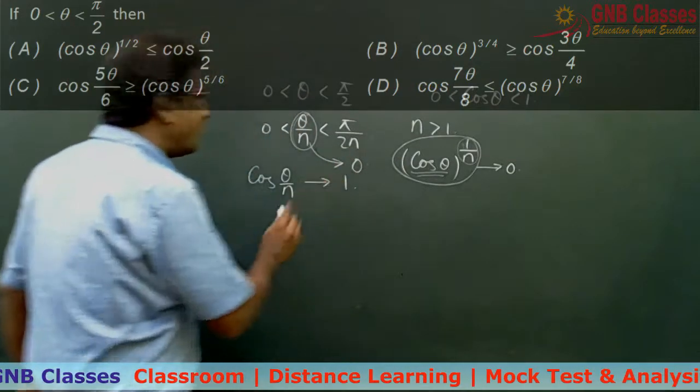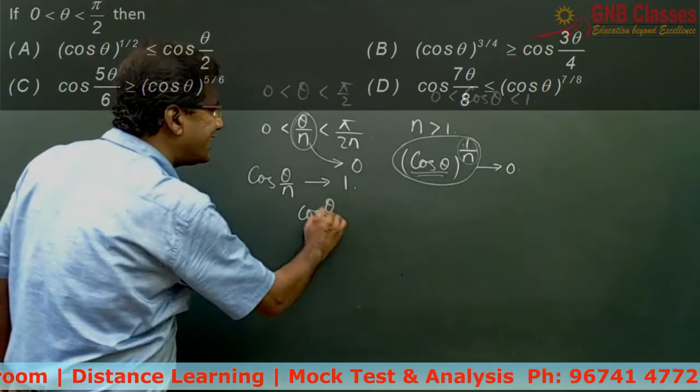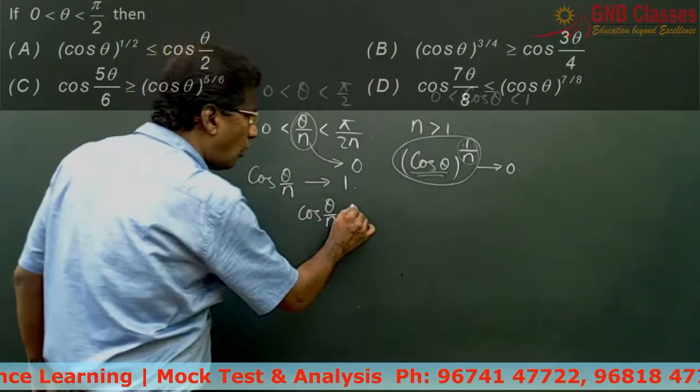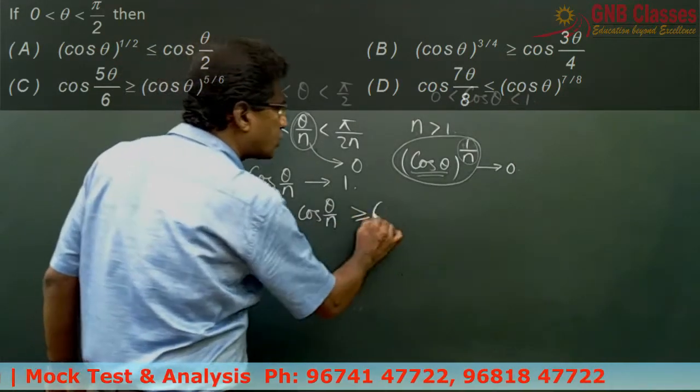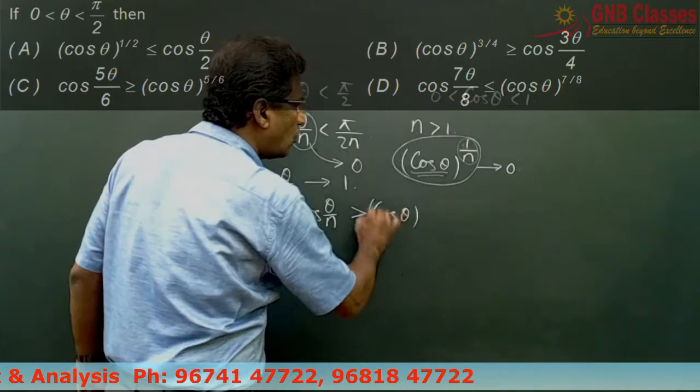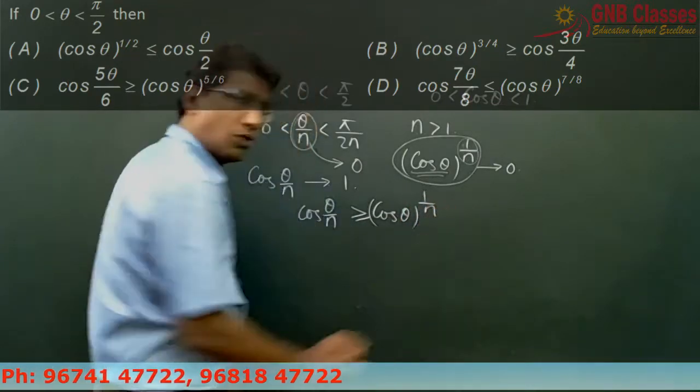We can say that cos theta by n will always be greater than or equals to cos theta whole to the power 1 by n.